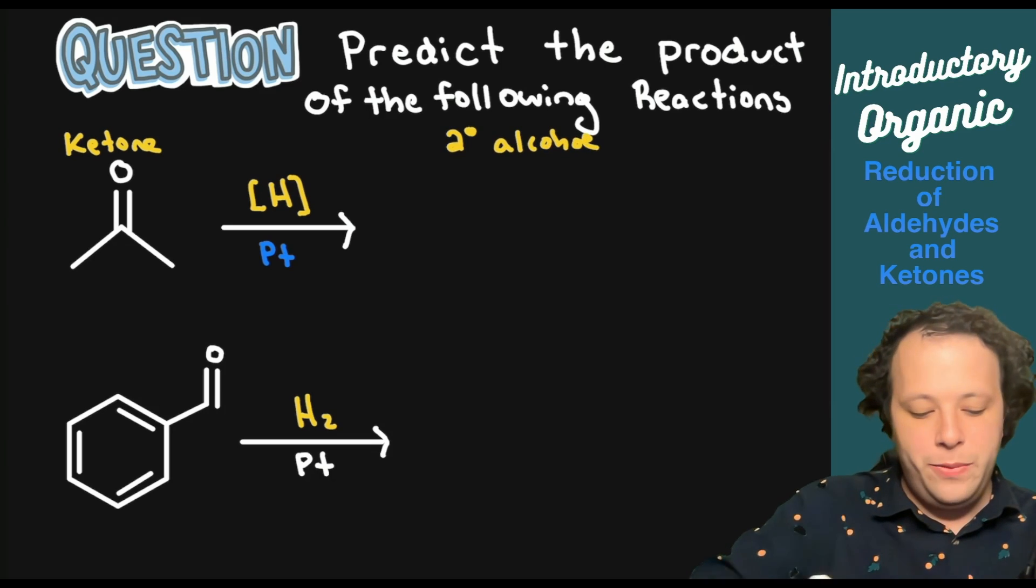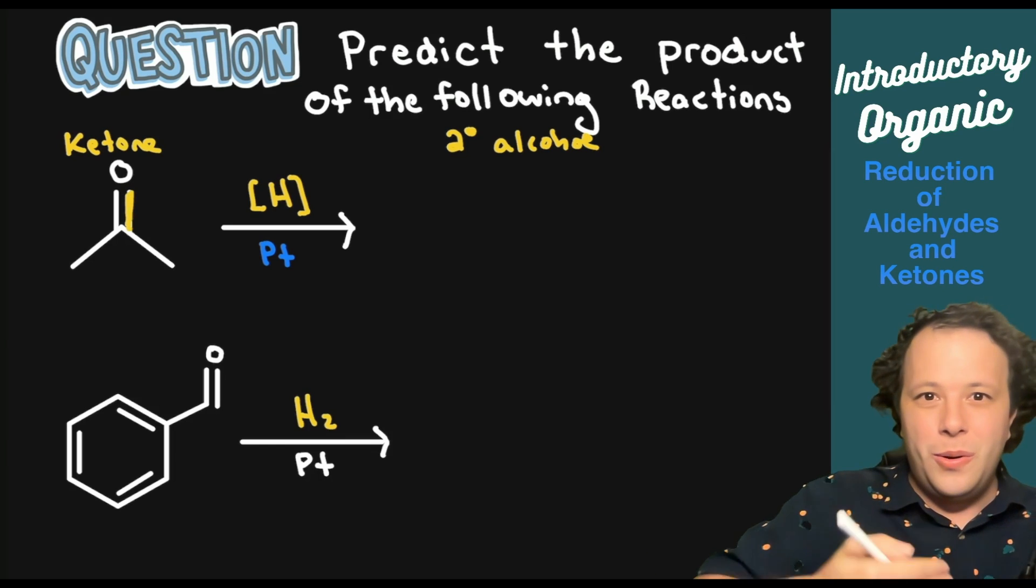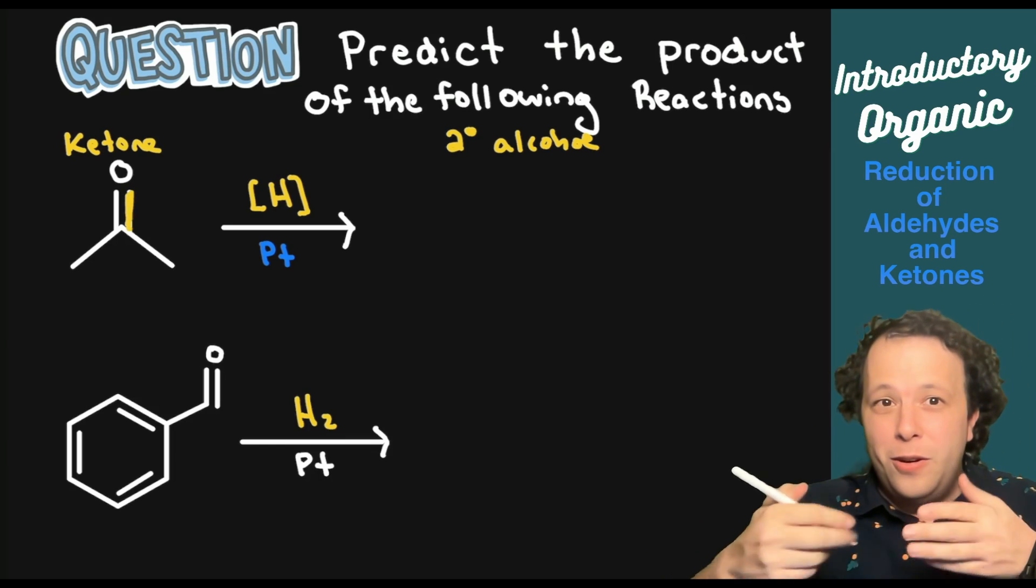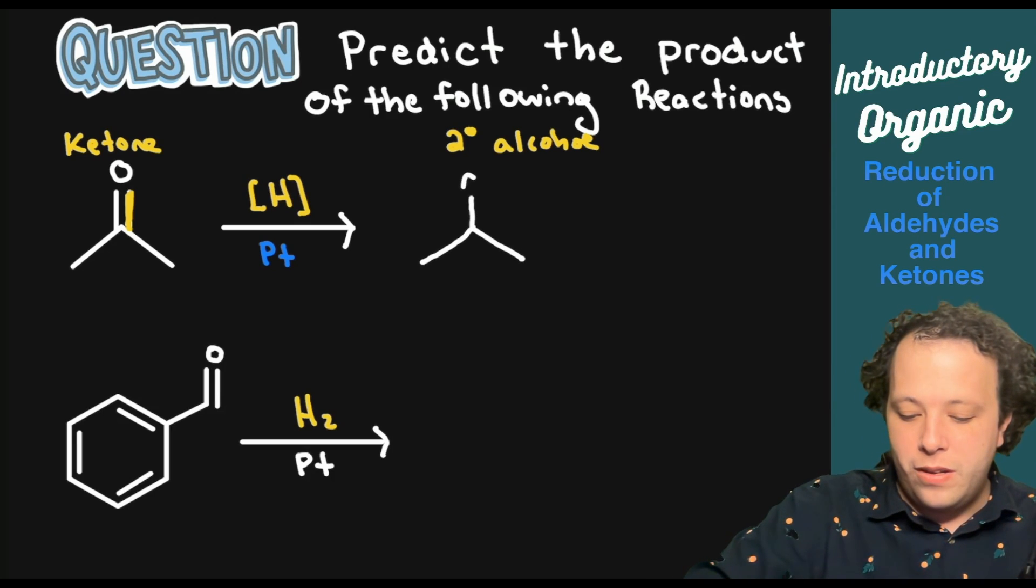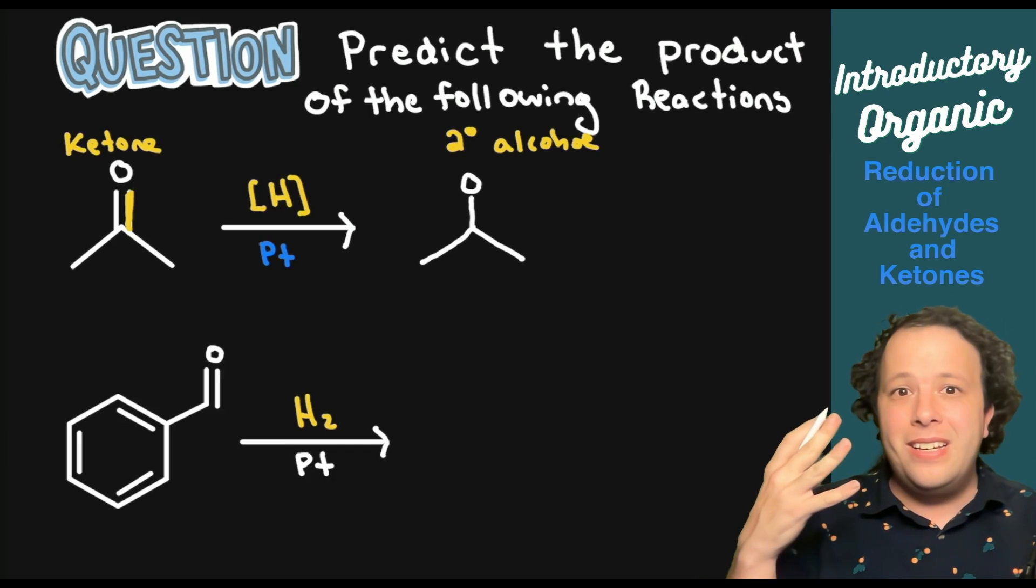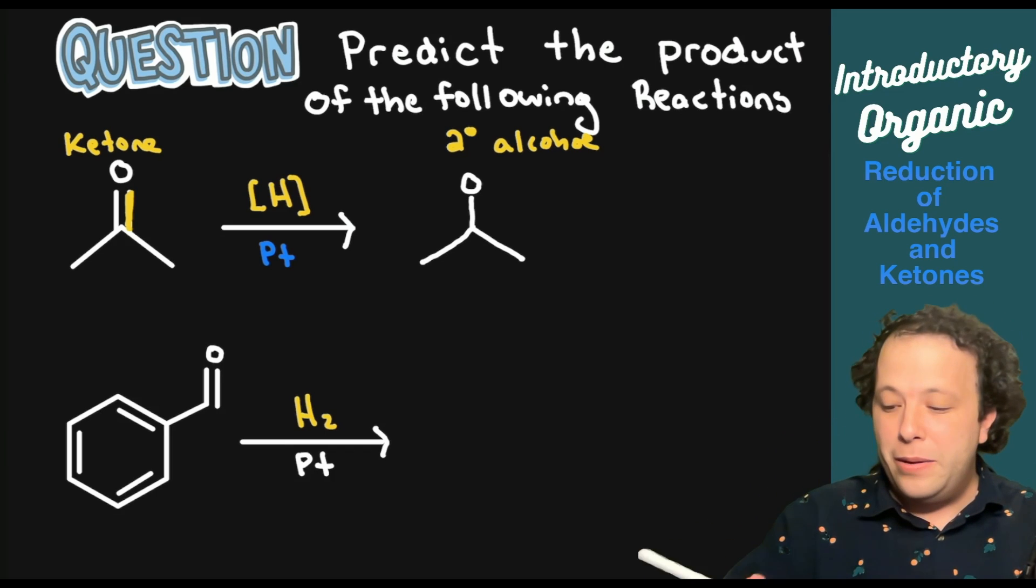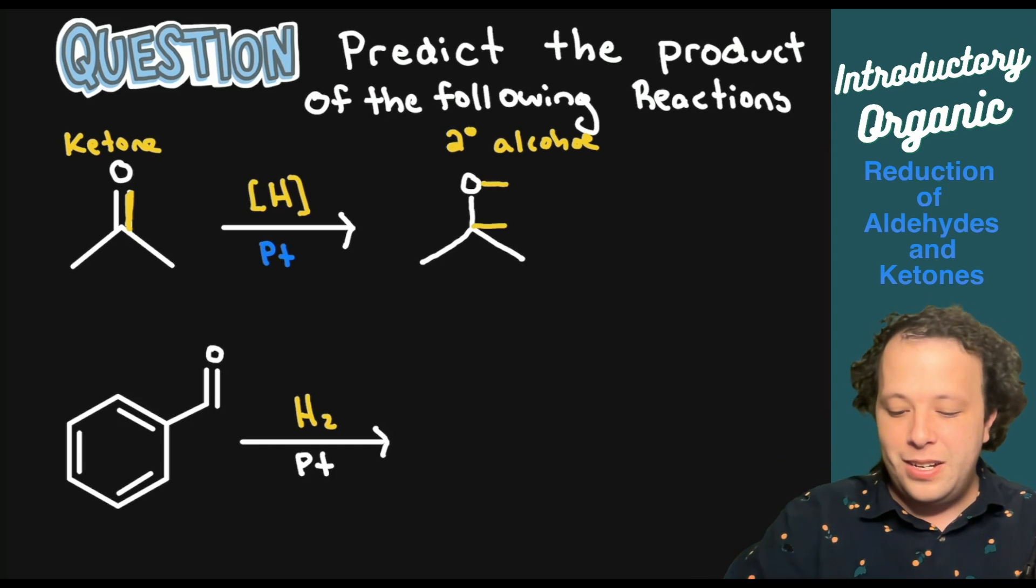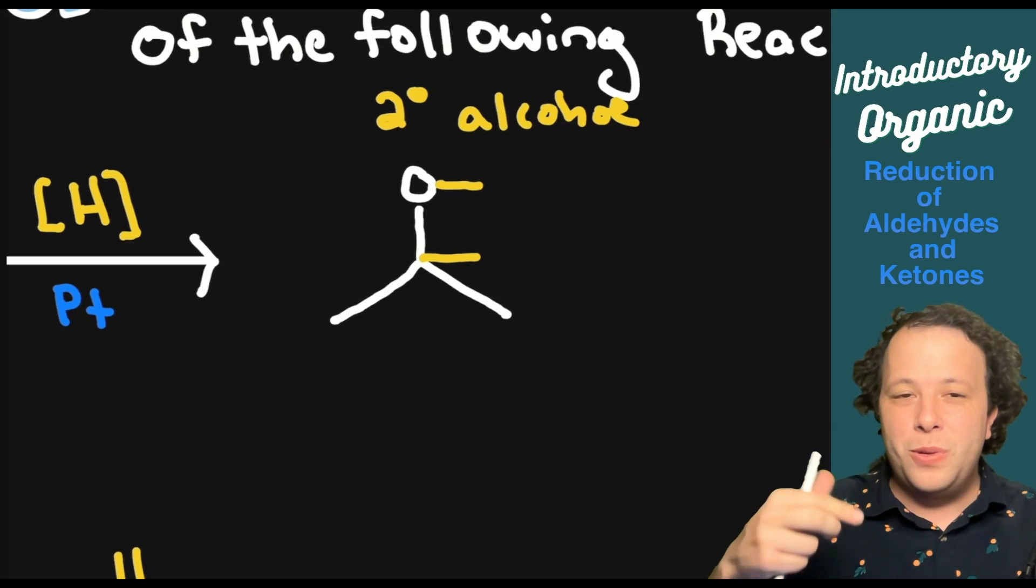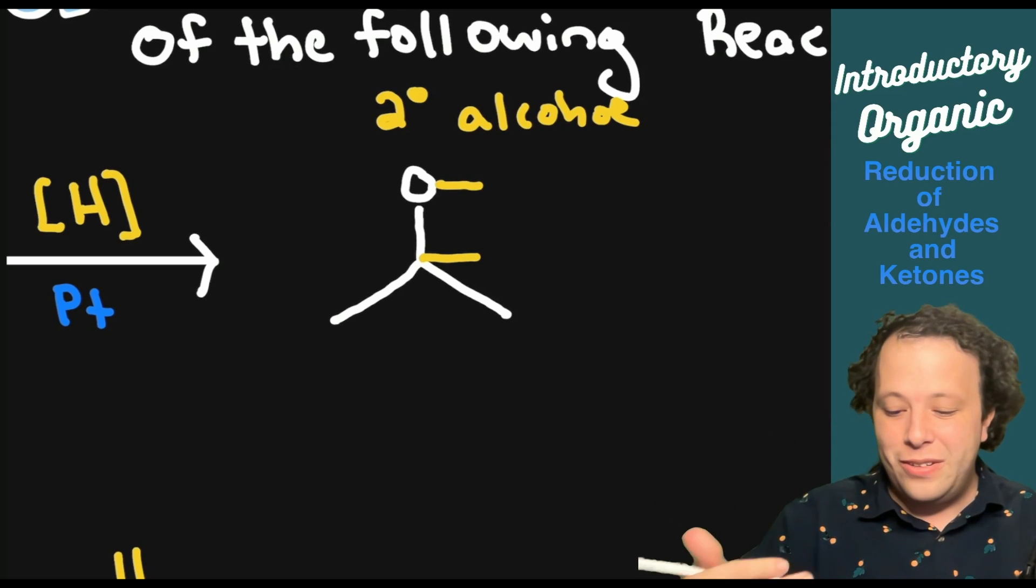Ketone is going to go to a primary alcohol. When we do this, we're going to be opening up the double door on our double bond. When that opens, we're adding a hydrogen to each individual part. Let's redraw our structure, keeping the base compound portions.